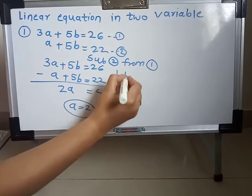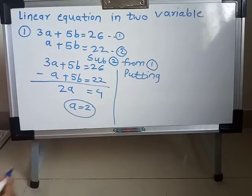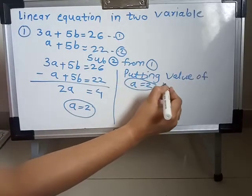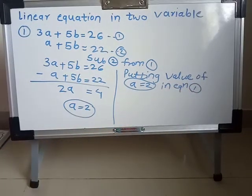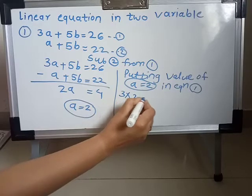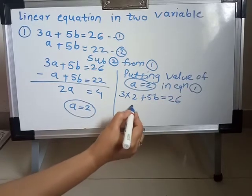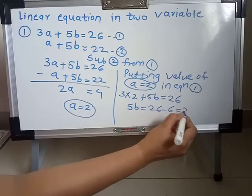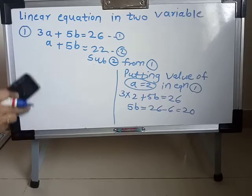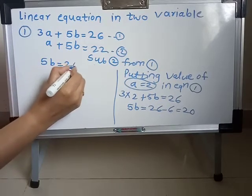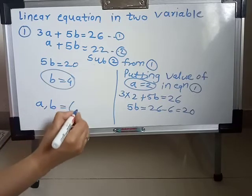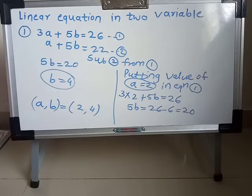Now putting the value A equal to 2 into equation first: 3A plus 5B is equal to 26, so 3 into 2 plus 5B equals 26. That gives 6 plus 5B equals 26, so 5B equals 26 minus 6 equals 20. Dividing 20 by 5, B is equal to 4. Our solution is A equals 2 and B equals 4.